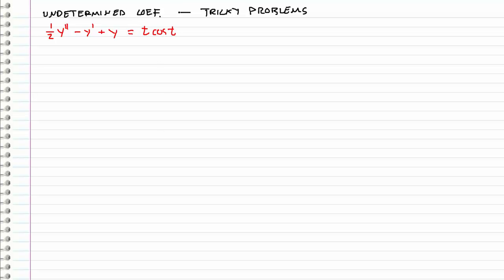Welcome back to another undetermined coefficients problem. This one is a little bit trickier — we have a t cosine t on the right-hand side. Recall that undetermined coefficients typically works when we have polynomials, exponentials, and cosine or sine. But in this problem we have a combination of them, so it gets a little harder when we start multiplying these by each other. It can still be done using undetermined coefficients, and we will take a look at that right now.